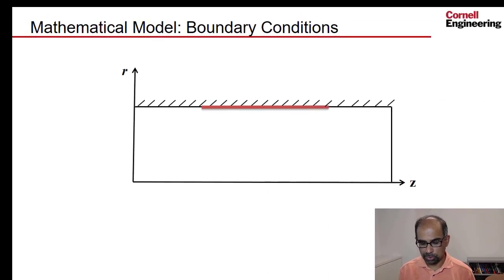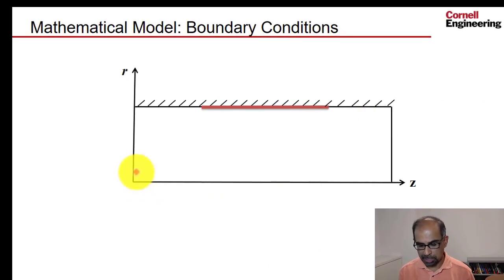So if I go to the domain, a schematic of the domain that I've shown over here, I've indicated the heated part of the wall by this red line, and this is where the flow is coming in.